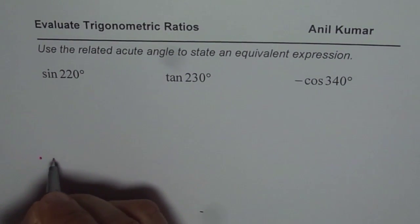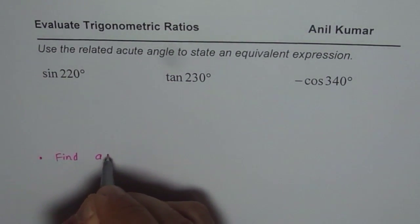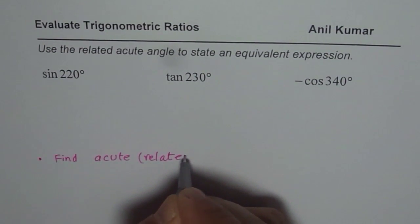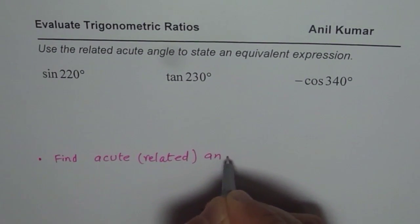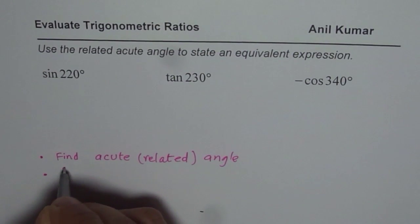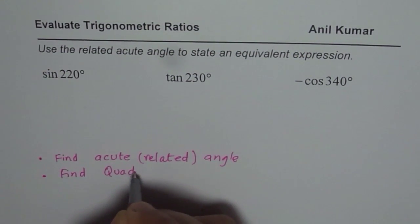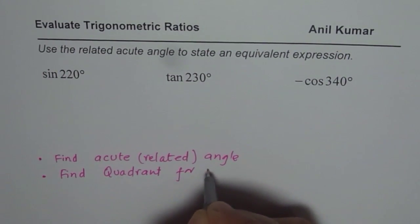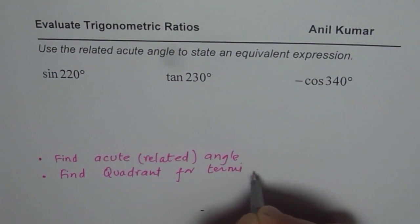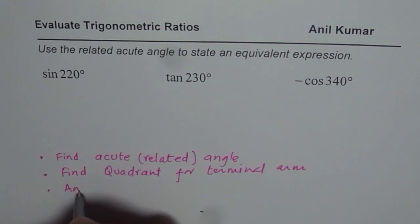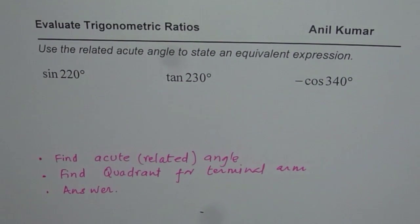Step number one is find the related acute angle. Step number two is to find quadrant for terminal arm. And then we need to write down our answer. So we will follow three steps. Step number one, find related acute angle.